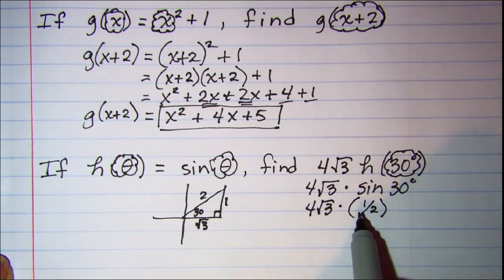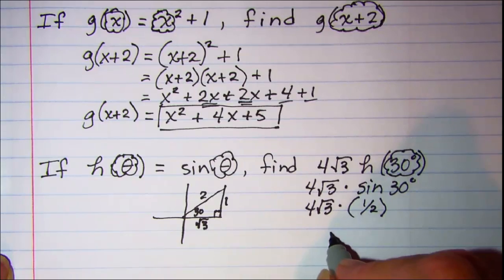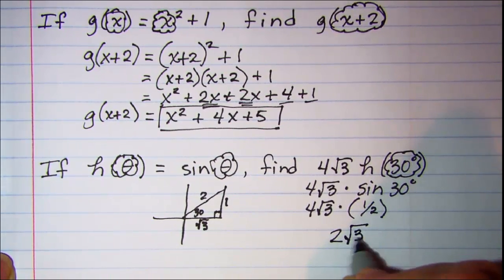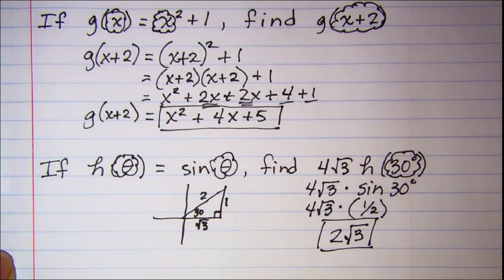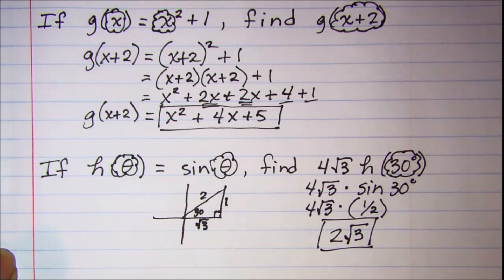If we do the math now, half of 4√3 is 2√3.